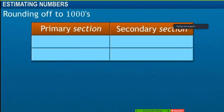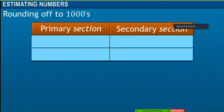Next, let's see an example to understand how numbers are rounded off to the nearest thousand. The number of students in a primary section of a school is 850. The secondary section of the school has 1,850 students. Here we see that 850 is closer to 1,000 compared to 0, hence it is rounded off to the nearest thousand, which is 1,000.